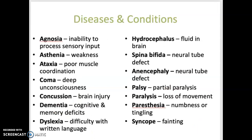Additional diseases and conditions: agnosia is difficulty processing sensory input, such as auditory, visual, or olfactory input. Asthenia is a loss of strength. Ataxia is a lack of muscle coordination. Coma is an unconscious state with the absence of voluntary response to stimuli.